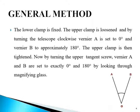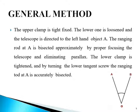Make sure that Vernier A and B are set exactly to 0° and 180°, otherwise some error will be introduced from the start. Next, the upper clamp is fixed, the lower one is loosened, and the telescope is directed to the left-hand object A. The ranging rod at A is bisected approximately by properly focusing the telescope and eliminating parallax. The lower clamp is tightened, and by turning the lower tangent screw, the ranging rod at A is bisected accurately.